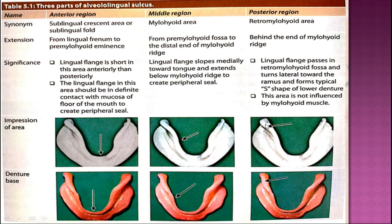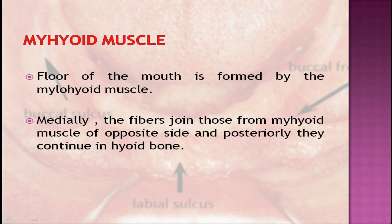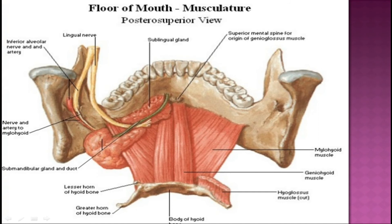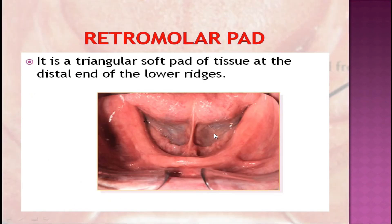The floor of the mouth is formed by the mylohyoid muscle, which arises from the whole length of the mylohyoid ridge. The fibers join those from the mylohyoid muscle of the opposite side, and posteriorly they continue into the hyoid bone. The muscle lies deep to the sublingual gland and other structures in the anterior region, so it does not affect the border of the denture directly in this region. Posteriorly in the molar region, it affects the lingual impression borders during swallowing and tongue movement.